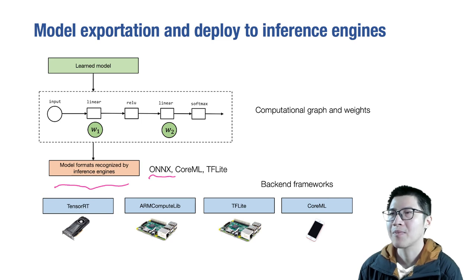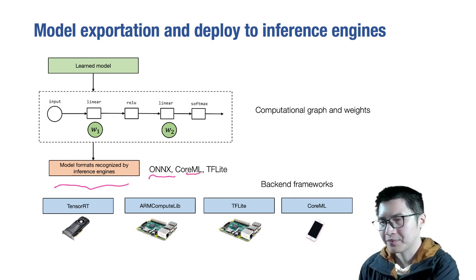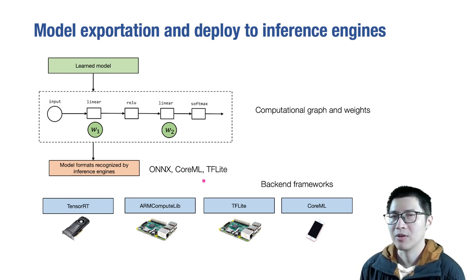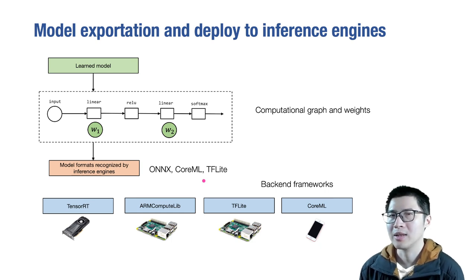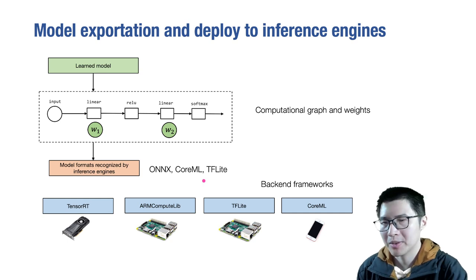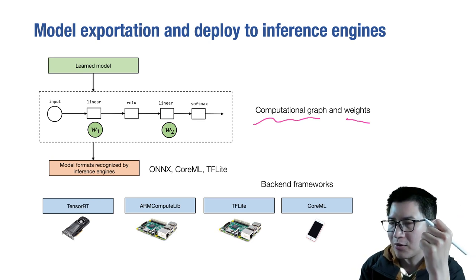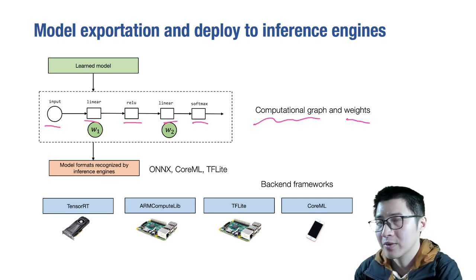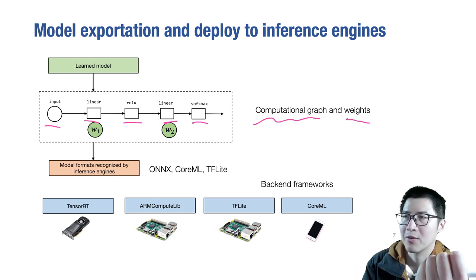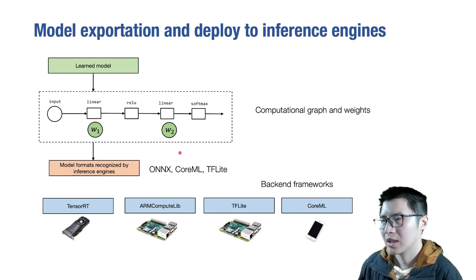There are different model formats recognized by inference engines. One common format is ONNX — Open Neural Network Exchange — which is widely used and was developed by Microsoft and others. Apple has its own format called Core ML, and TensorFlow comes with the TensorFlow Lite format, which uses a FlatBuffer format to describe a computational graph. Most of these formats describe the computational graph and the weights. For example, a two-layer neural network in this format will describe a sequence of operations to carry out for inference and attach the weights for each stage.